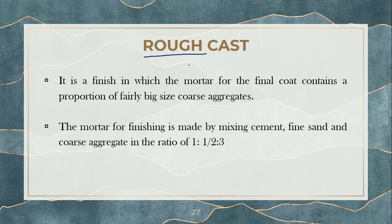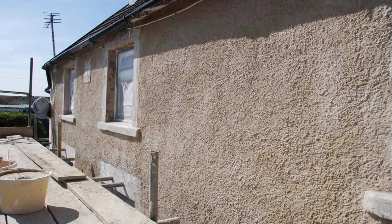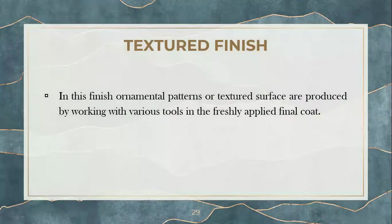The next kind of finishing is rough cast — the name itself tells you the surface will be rough. When you touch the surface you get a rough, gritty feeling. The finishing coat consists of bigger size aggregates to create that harsh feeling. The concrete or mortar proportion used is around 1:1.5:3, which is our M20 proportion.